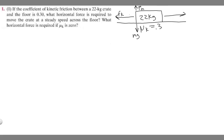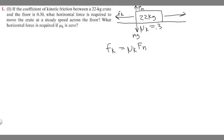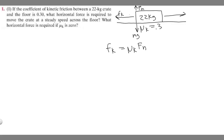The way we're going to solve for F sub k is by using this formula: F sub k equals mu sub k times F sub n. We know mu sub k is 0.3, but we need to find the normal force first, and that will allow us to solve for the kinetic friction force.